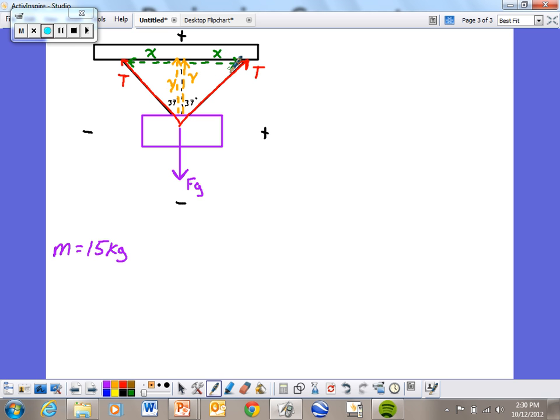I'll do the X first because it comes first in the alphabet. X is the opposite side of our particular angle. Because it's the opposite side, that means it's going to be found by taking the sine of the angle, which is 37 degrees. And our hypotenuse is right here, that's tension.